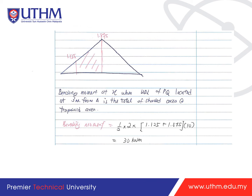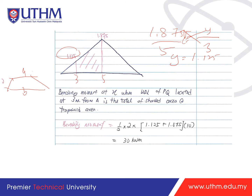After plotting the moment influence line, the ordinates are 1.875 and 1.125. To find the ordinate at the edge of the UDL region, use similar triangles: 5/5 = y/3, giving y = 1.125. The shape under the UDL is a trapezoid with parallel sides 1.875 and 1.125 and height 2 meters. Area = (a + b)/2 × h = (1.875 + 1.125)/2 × 2 = 3 square meters. Bending moment = 10 × 3 = 30 kilonewton·meter.